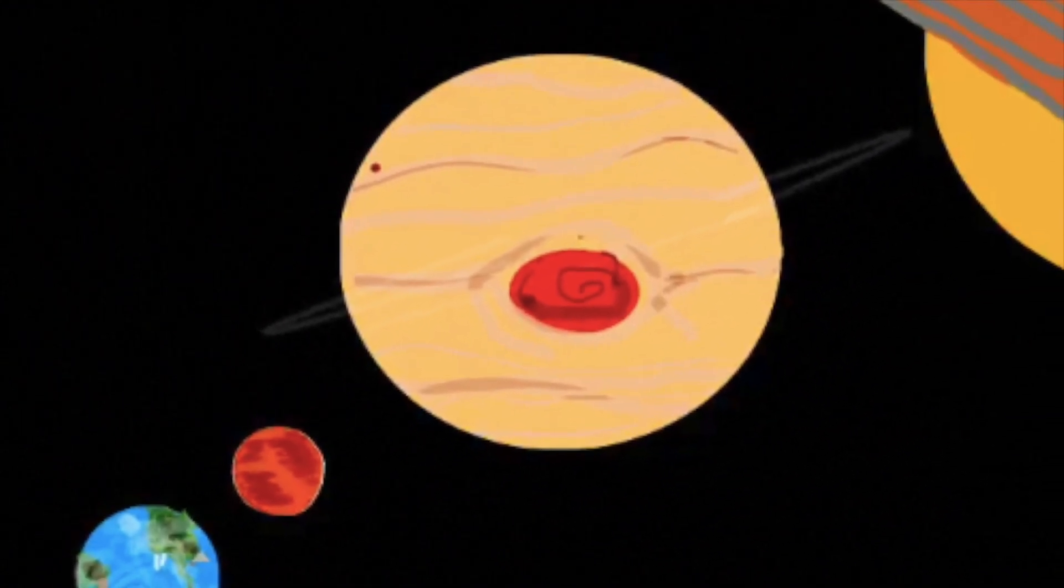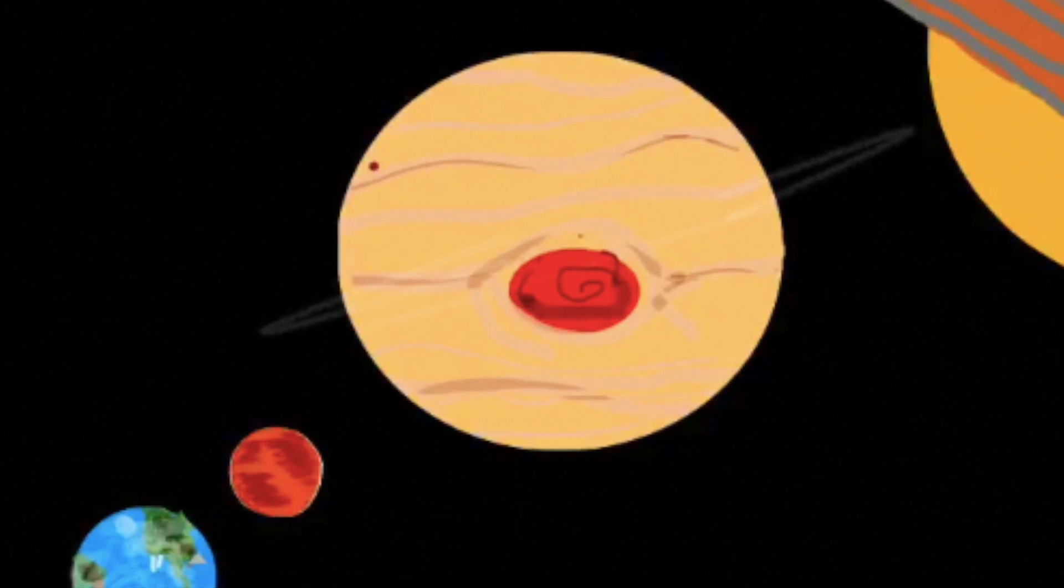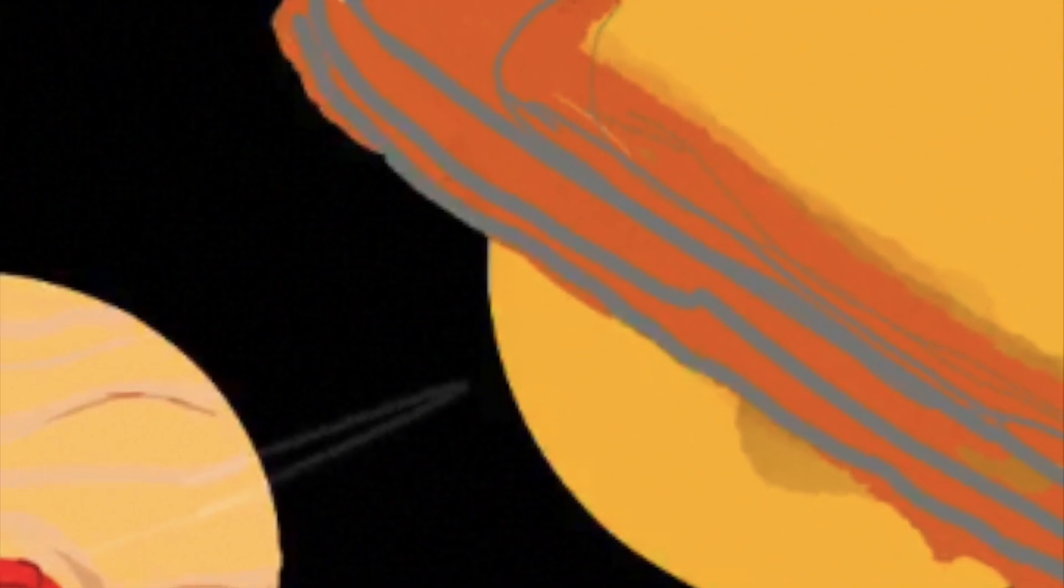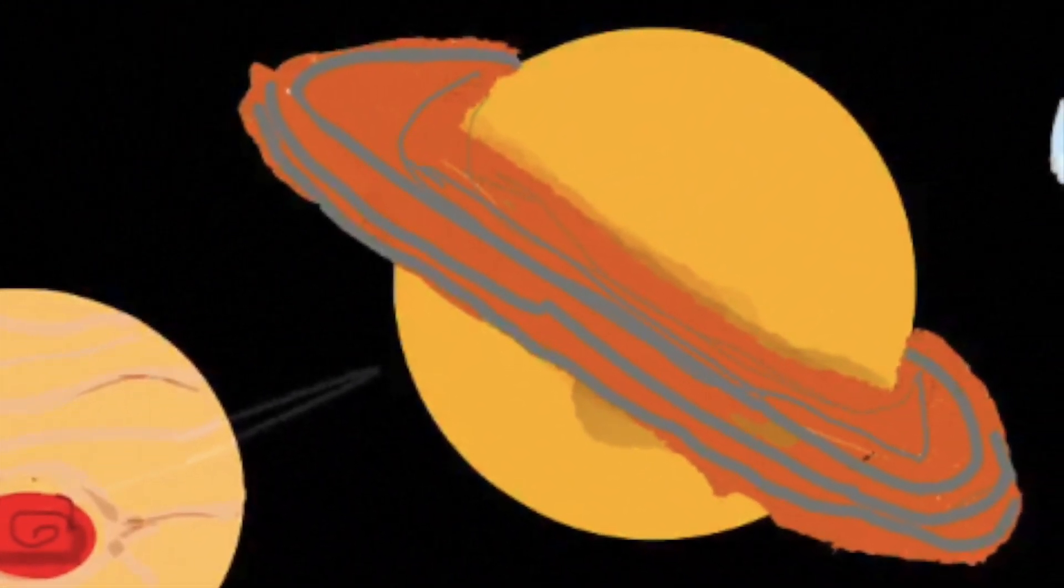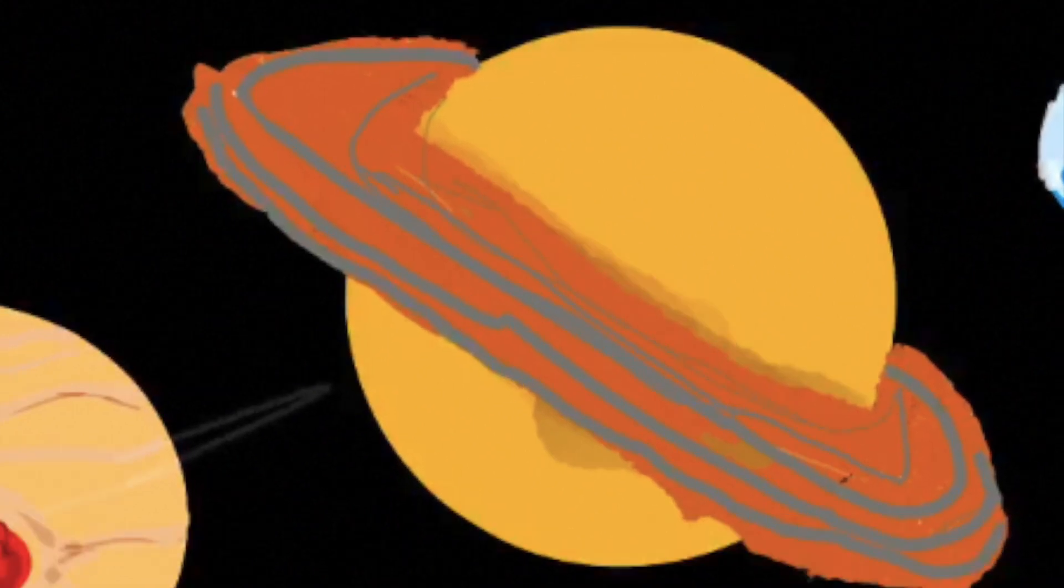It has 80 moons and it has rings also, but you can't see them. Saturn is the sixth planet. You can see the rings on that planet.